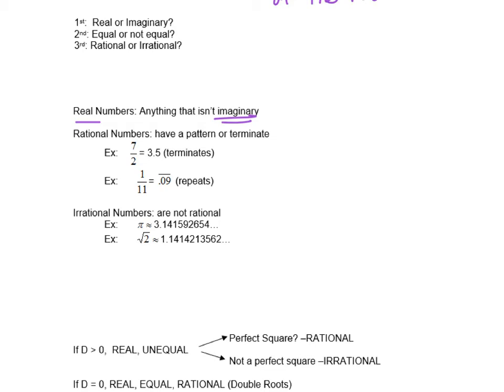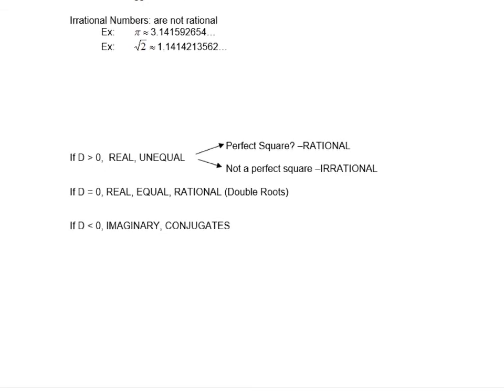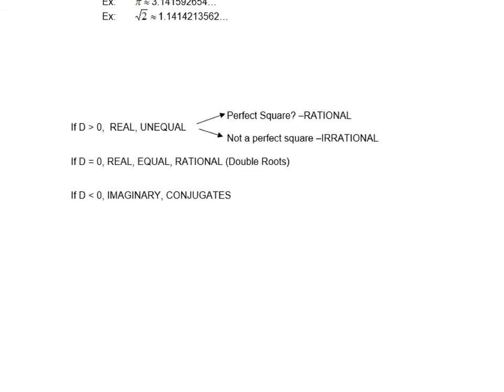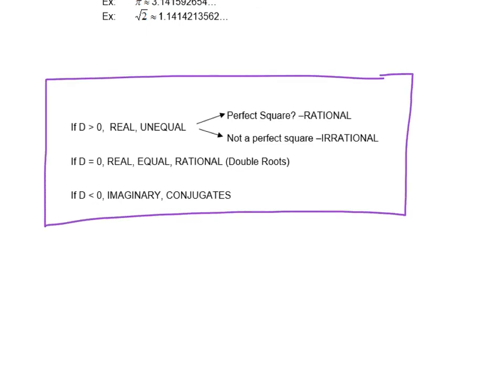So what we are going to do is follow this. This is going to be the important part of determining the nature of our roots. So where it says d, that stands for discriminant. So when we do our b squared minus 4ac, if that answer, if that number is greater than 0...